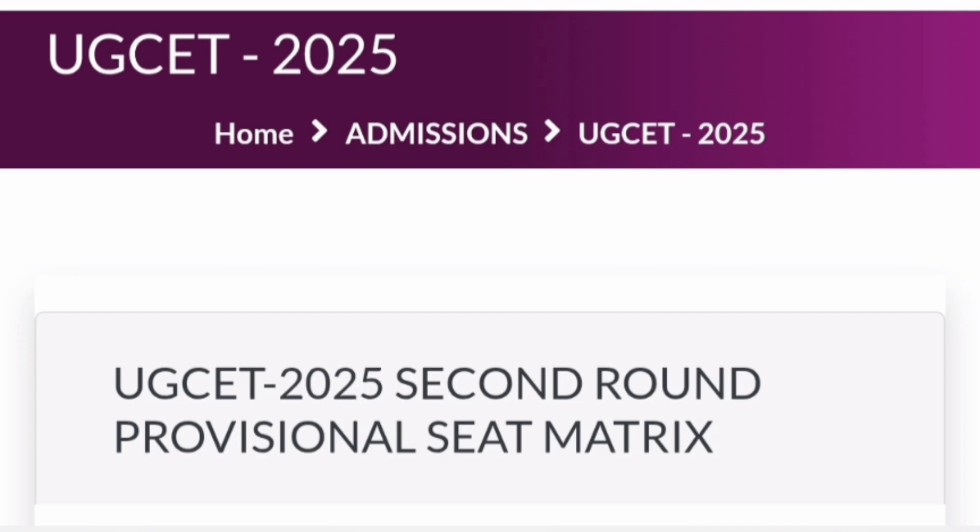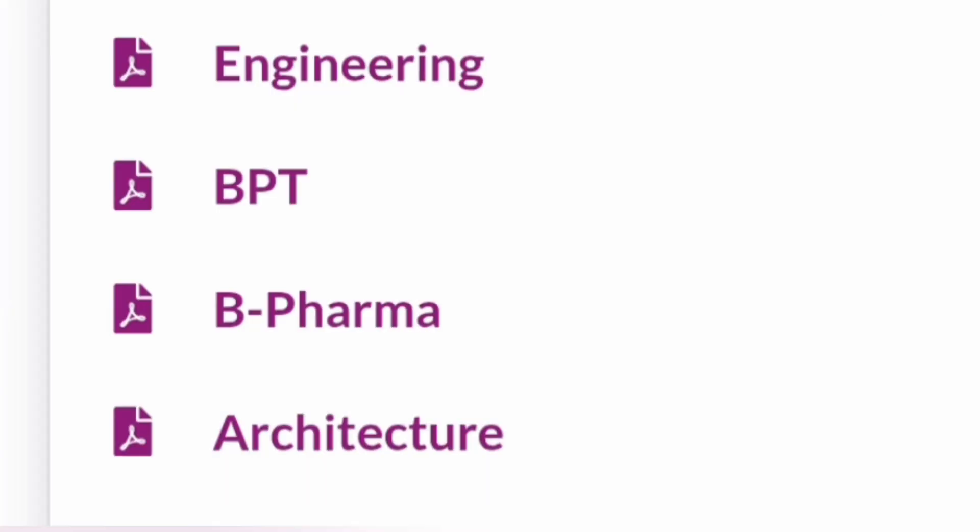If you go to the KEA portal under UGCET 2025, it is under Home, under Admissions — there is a new link for UGCET 2025 second round professional seat matrix, which you can see here.